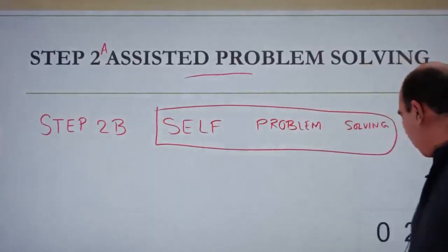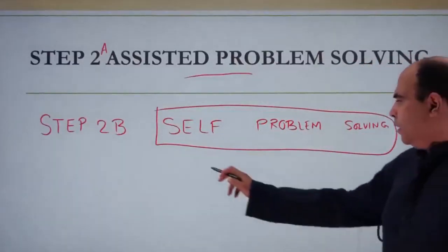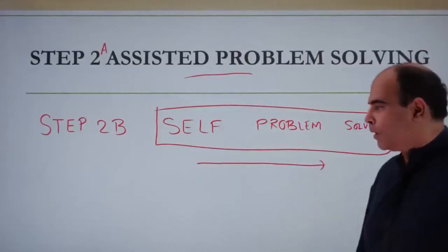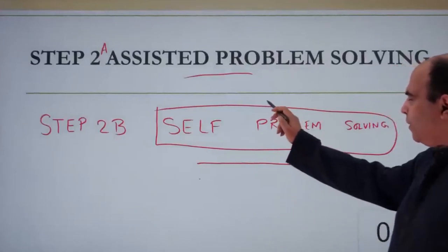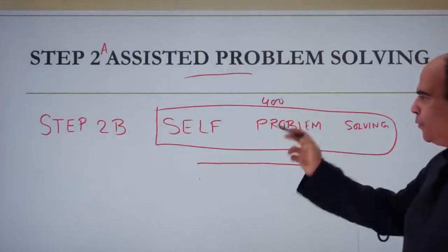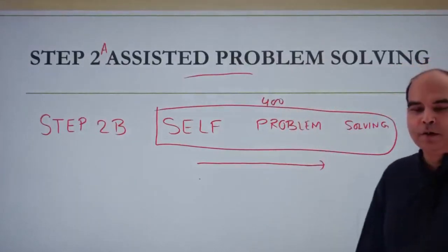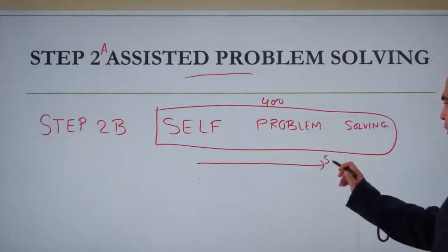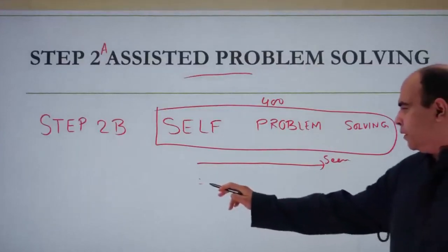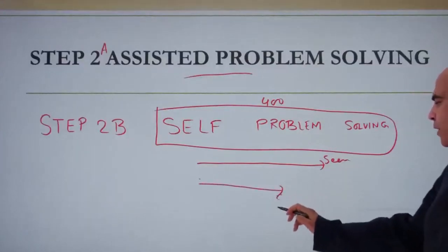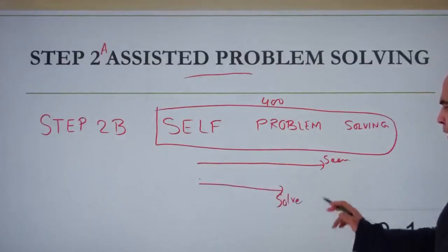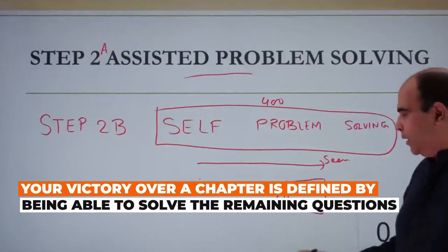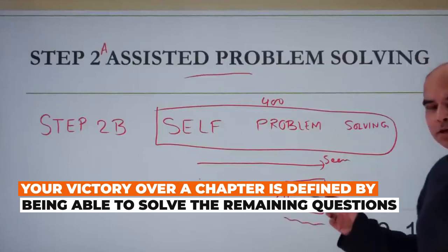When you go through self problem solving, you will not be able to solve all the questions you pick up. For example, in a chapter like time, speed, and distance, if you define that you want to do 400 questions of self problem solving, only a portion of those will be questions you're able to solve. In my view, the journey of your preparation and victory in the chapter is being able to self-solve these questions.